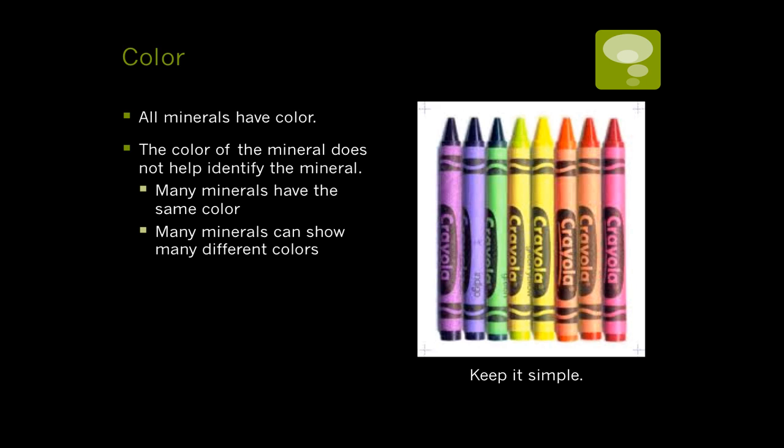We use the color of a mineral to help identify it, but it is the least reliable of all the characteristics because many minerals have the same color, and one specific mineral can have many different colors. For example, fluorite can be green, blue, and purple, but there were a dozen minerals in our kits that were white and clear looking. When identifying color, keep it simple — use basic colors, nothing complicated.